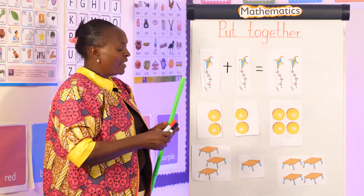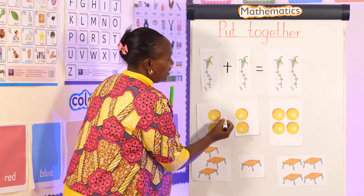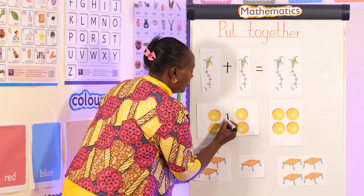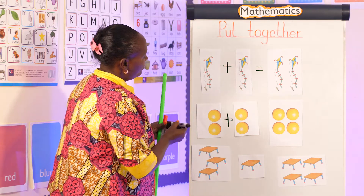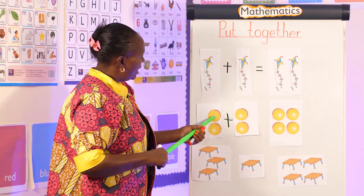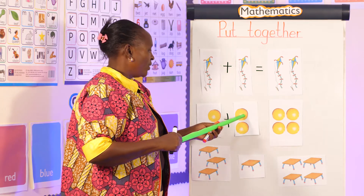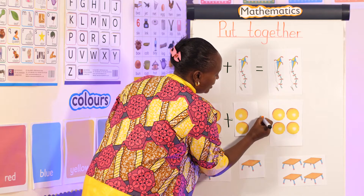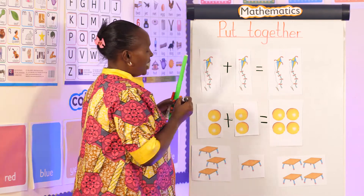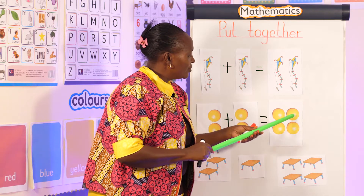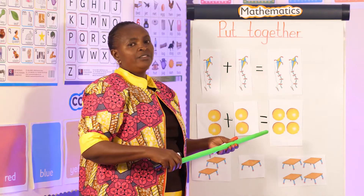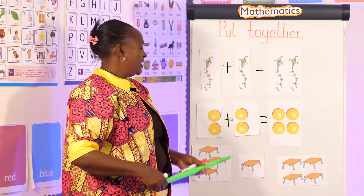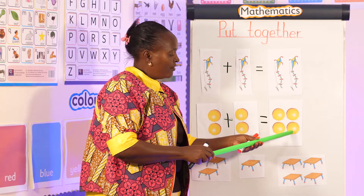How many? One, two. If I add these two to this one — two plus one — how many will I get? Two oranges and two oranges are equal to one, two, three, four. So two plus two equals one, two, three, four.